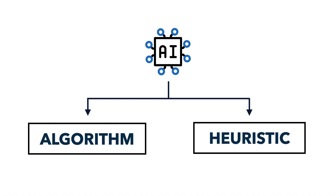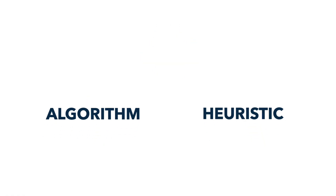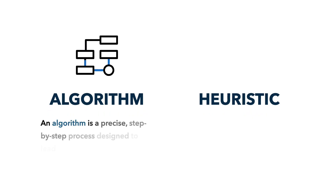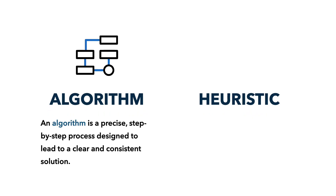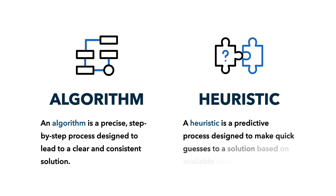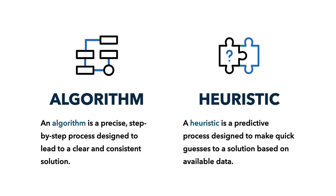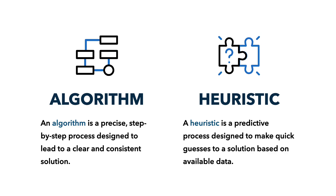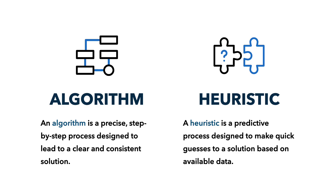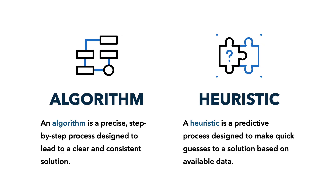In summary, many types of AI, including GenAI, rely on algorithms and heuristics. An algorithm is a precise step-by-step process designed to lead to a clear and consistent solution. They're foundational in helping AI to recognize language patterns and perform structured tasks like matching and sorting. A heuristic is a predictive process designed to make quick guesses to a solution based on available data, even if that data is incomplete or uncertain. Heuristics are used by various digital systems, including AI, to suggest content, recommend products, or generate responses. While imperfect, heuristics allow AI to navigate complex problems where a precise solution is not always possible.